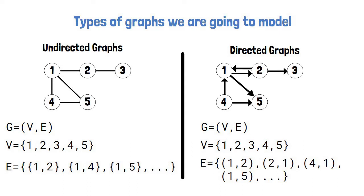For example, the edge between 1 and 2 is included once in the edges of the undirected graph. But in the directed graph, we have both the 1→2 and 2→1 edges. Also note that the edge between 4 and 1 is written with 4 on the left and 1 on the right, to match the edge direction.